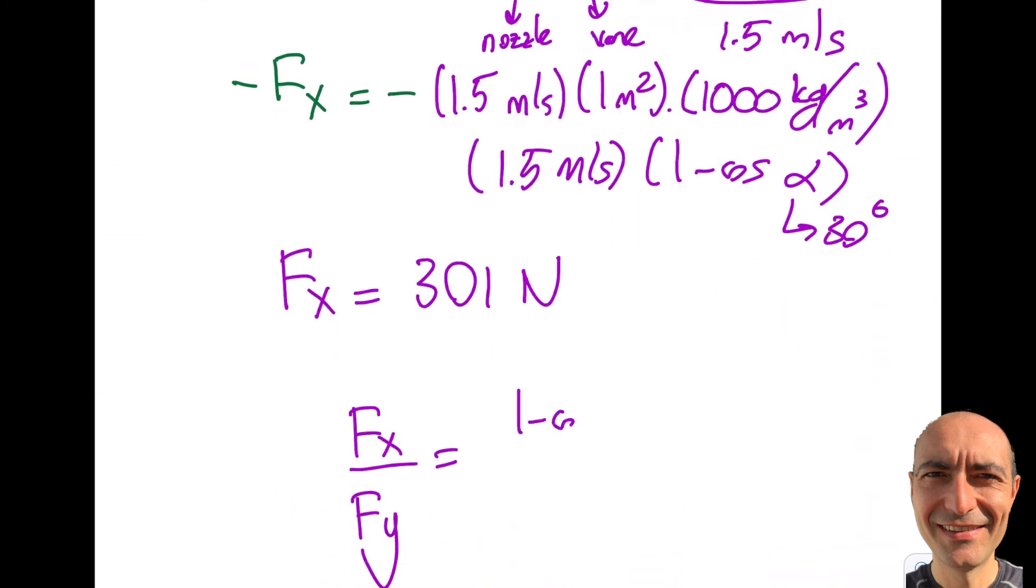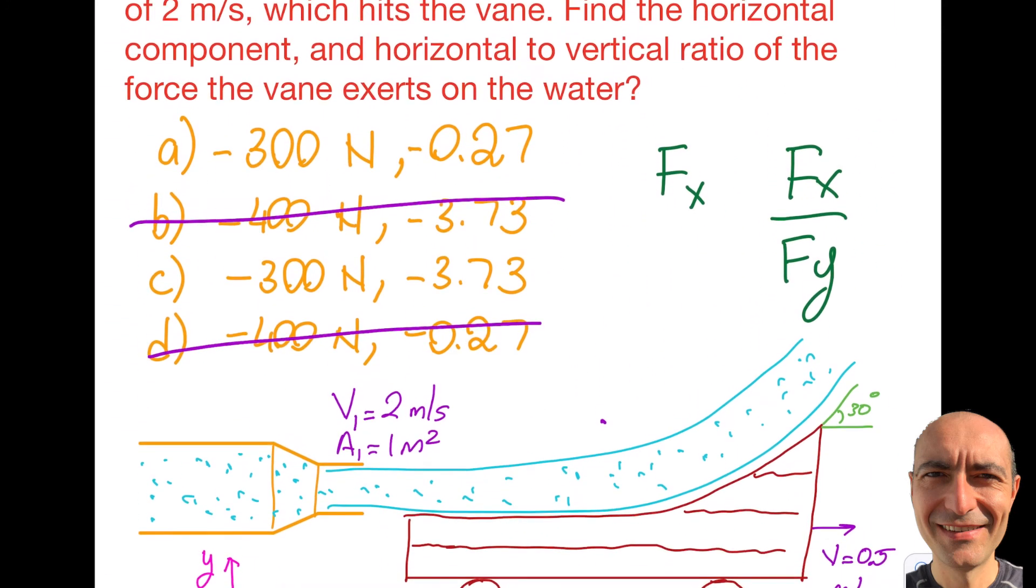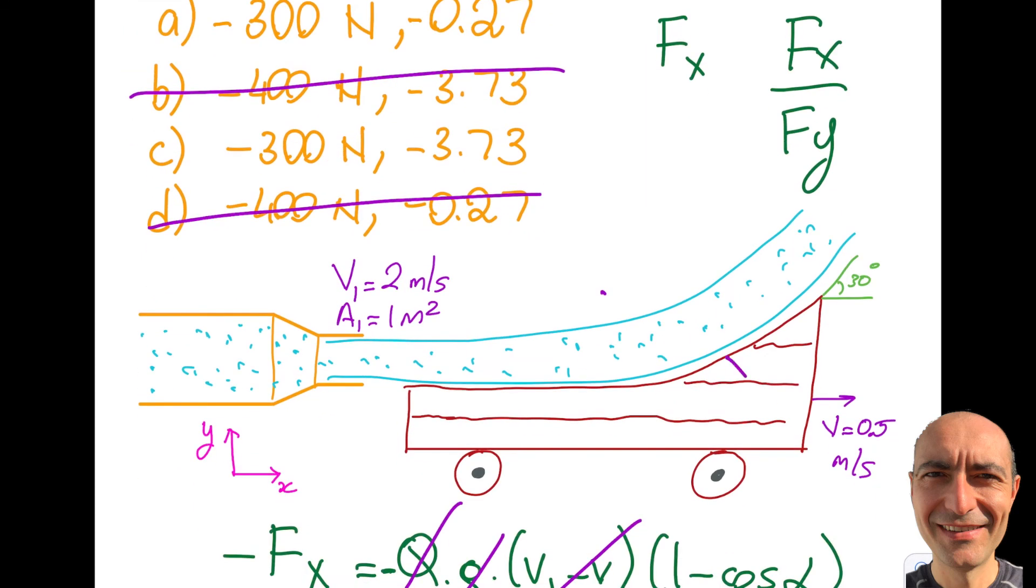Substituting α = 30 degrees and calculating, I get 0.27. Now, why is there a negative sign? All the choices are negative.